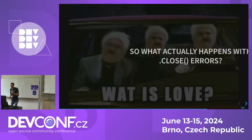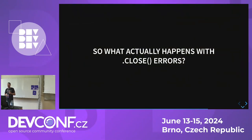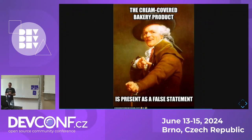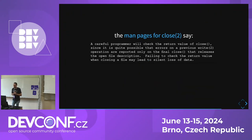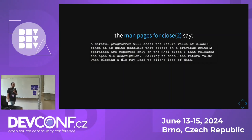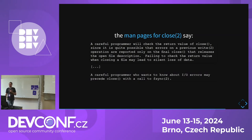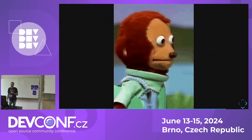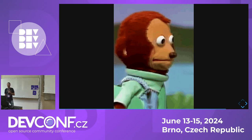Let's go back to the earlier topic: what actually happens when close errors? I don't really know, and no one does. The man page for close says: 'A careful programmer will check the return value of close, since it is quite possible that errors on a previous write operation are reported only in the final close. Failing to check the return value when closing a file may lead to silent loss of data.' And then later it says a careful programmer may precede close with a call to fsync. Who does that? I have never seen code that does that. We should probably all be sticking to databases.